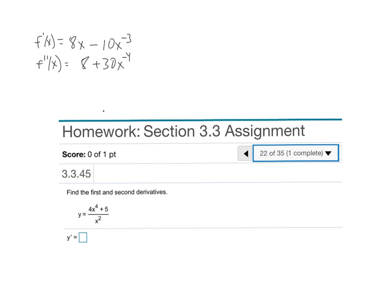The quotient rule would be the bottom (the denominator) times the derivative of the top, which is 16x^3, minus the numerator - see, I almost made that mistake - 4x^4 + 5 times the derivative of the denominator, which is 2x.